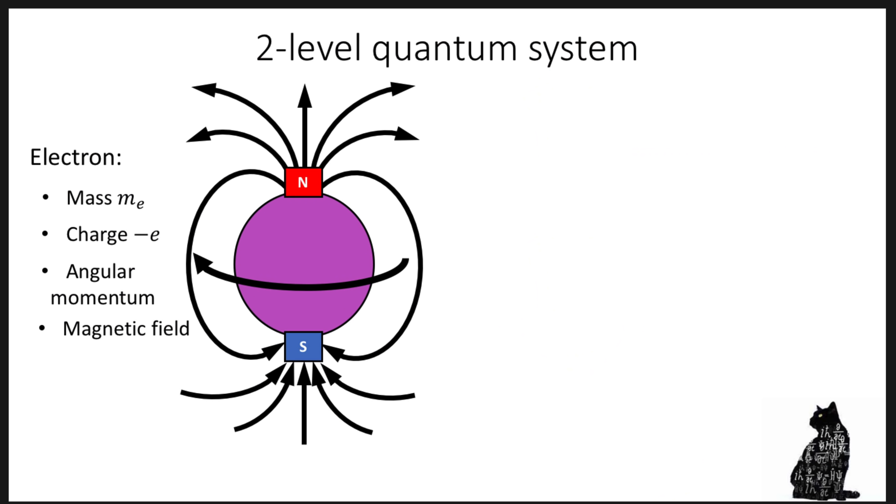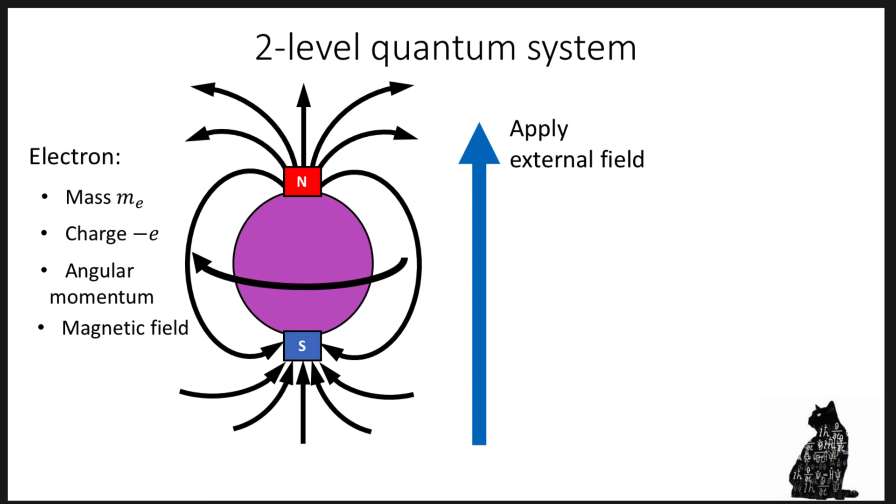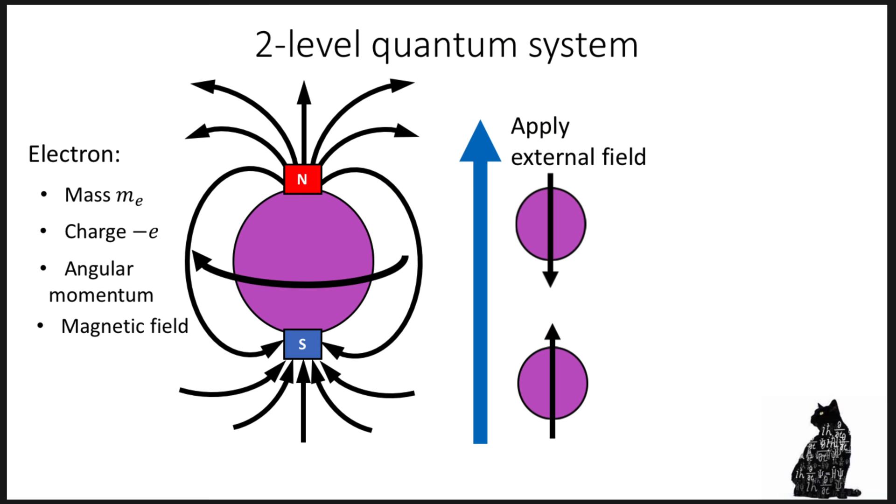And so when you have charge that's spinning around in a circle, what you get is a magnetic field. So basically an electron is like the little tiniest magnet that you can have. And so what happens now is if I put that electron in another magnetic field, like some external field, what happens is that the electron's magnetic field will either align parallel or what's called anti-parallel, so align against it. And there's an energy difference between those. It takes more energy to be aligned anti-parallel than it does parallel.